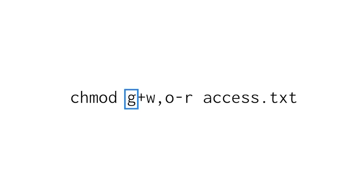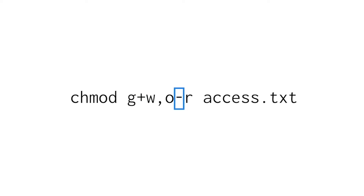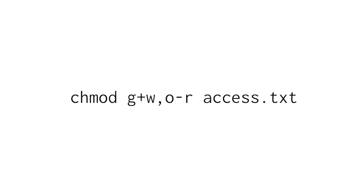In this particular example, 'g' indicates we will make some changes to group permissions, and 'o' to permissions for other. These owner types are separated by a comma in this argument. For whether we want to add or take away permissions, we use mathematical operators. The plus sign after 'g' means we want to add permissions for group, and the minus sign after 'o' means we want to take them away from other. We've already learned that 'r' represents read permissions, 'w' represents write permissions, and 'x' represents execute permissions. So in this case, the 'w' indicates that we are adding write permissions to the group, and 'r' indicates that we are taking away read permissions from other.